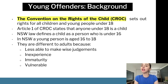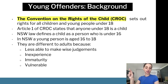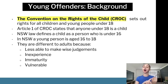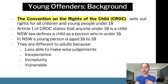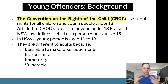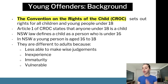In the introduction to a young offender essay, I would state that we have international obligations to CROC and must protect children. The reasons for this protection are that children are not able to make wise judgments, are inexperienced, immature, and more vulnerable — vulnerable to crime, to being influenced, and to being hurt. A sentence justifying why we need to treat young offenders differently will already earn you marks and engage a marker.